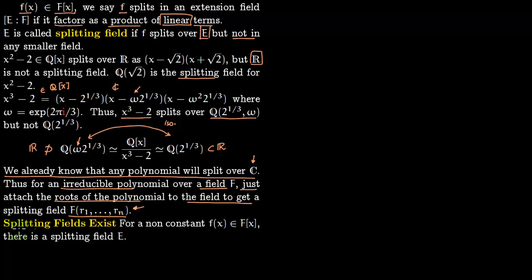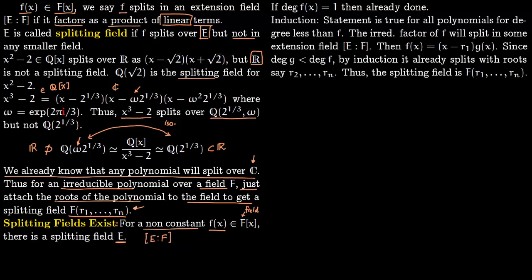Our first result to prove is that splitting fields exist. Say you have a non-constant polynomial f(x) in F[x], where F is a field. Then there exists a splitting field E for f(x) over F. If the degree of f(x) is one, we are already done — it is already linear, so there is nothing to prove. We proceed by induction; the case n = 1 is done.